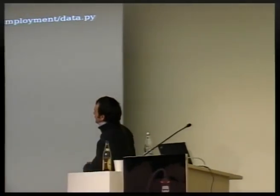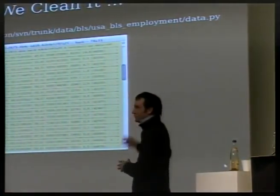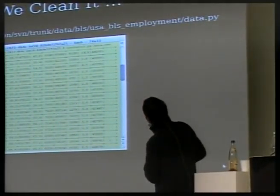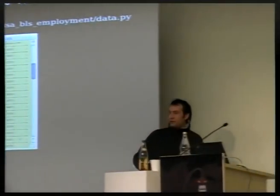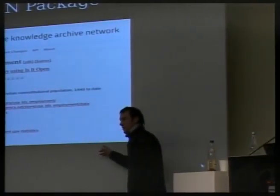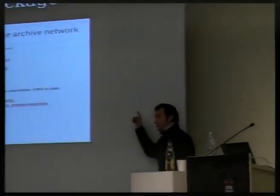The answer on the first point is we've done it — there is a public URL. You've got to replace SVN with HG and get rid of the trunk because it's moved to Mercurial, but if you go to HG/data/BLS/ you will get the code that does the parsing. Unfortunately, this is the problem with chopping up stuff — at the bottom of this page, cut off, is an extra field which says 'source' and it has information about the Mercurial repository.